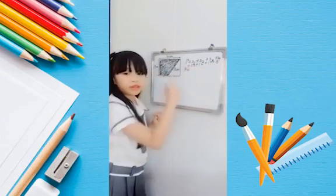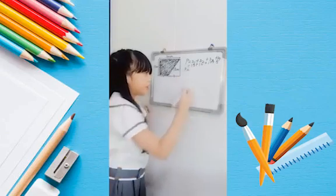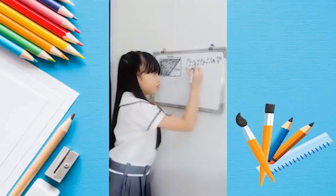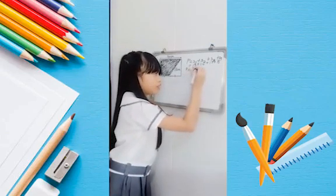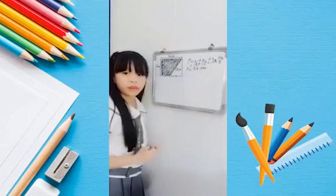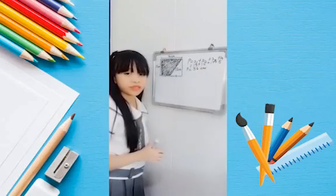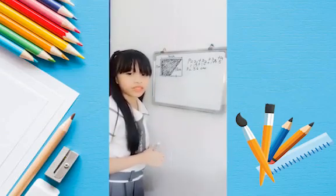Now we add all four sides together, and the answer is 56 centimeters. The perimeter of the shaded part is 56 centimeters.